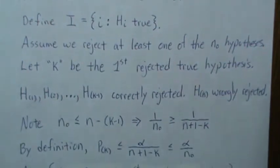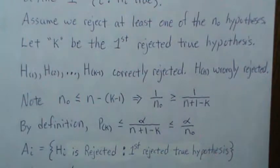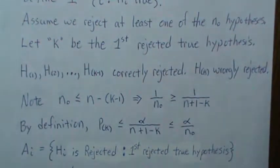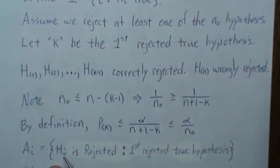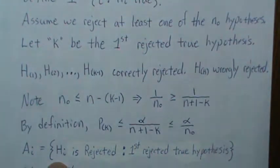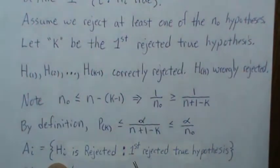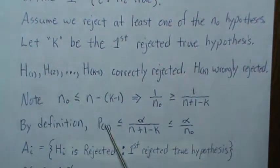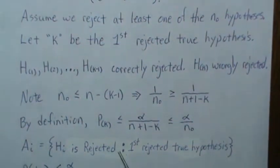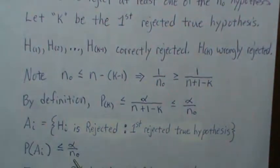So now we'll set up a set A_i, which contains all outcomes where H_i is rejected and it is the first rejected true hypothesis. This set also contains cases where H_i is the only rejected true hypothesis or where one or more additional null hypotheses are also rejected — so any type one error scenario for a specific i. We just showed that the probability of rejecting H_i, assuming it's the first true hypothesis rejected, is less than or equal to alpha over n₀.